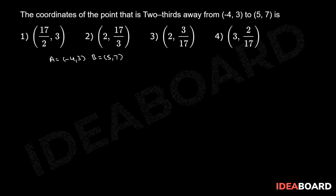The required point is two-thirds away from A to B. That means the required point divides AB in the ratio two is to one.